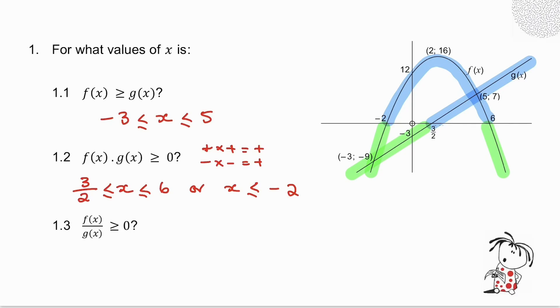Alright. In 1.3, I've asked you a very similar question, except this time instead of multiplying, we're dividing. So I know that a plus divided by a plus is a plus, and I know that a minus divided by a minus is also a plus. So it is a very similar question I'm asking, which means that x can go between 3 over 2 and 6, or x can be less than minus 2. So what is the difference between the two questions?